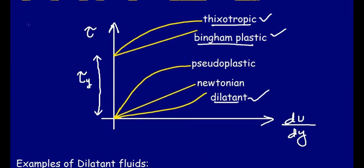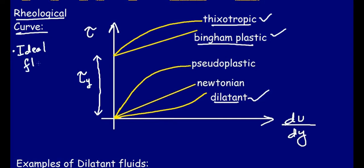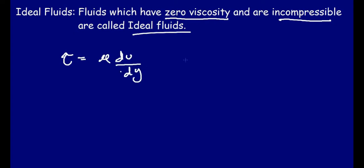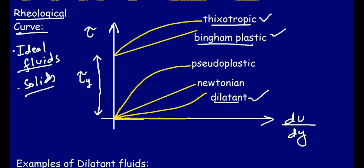Two important things not yet mentioned on the rheological diagram are the positions of ideal fluids and solids. Ideal fluids have zero viscosity and are incompressible. Because mu equals zero, tau will always be zero. Hence, ideal fluids are located on the x-axis of the rheological curve. For solids, no matter how much shear stress you apply, there will be no velocity gradient. Hence, solids are located on the y-axis of the rheological curve.